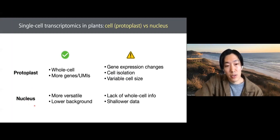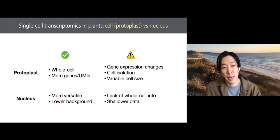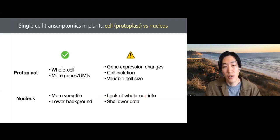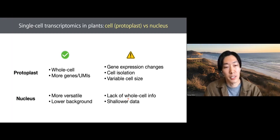On the other hand, the nuclear approach is good in that the isolation protocol can be more versatile. Nuclear isolation can be done more quickly and on ice, which lowers background gene expression changes. However, you will lose whole-cell information — it's just nuclei, although it can be considered as nascent transcripts. You will also lose cytosolic RNA, so you get shallower data, which could be overcome by sequencing more nuclei. You need to be aware of these pros and cons. In our lab, we mainly use the nucleus approach.